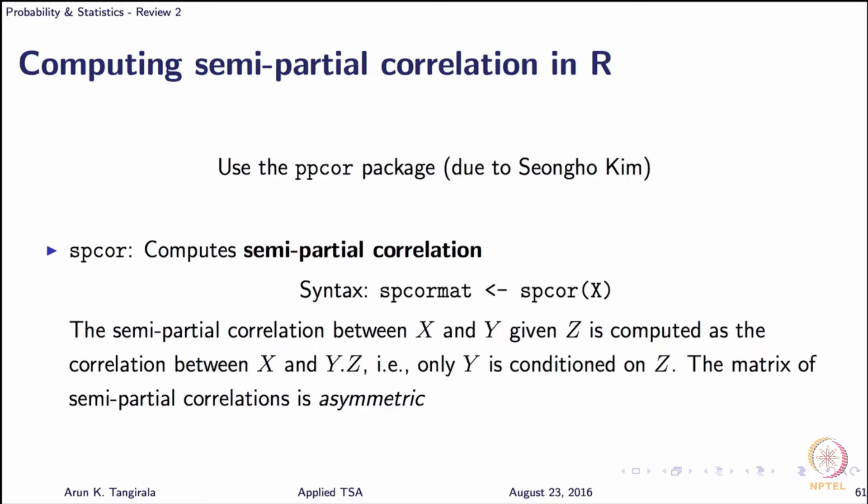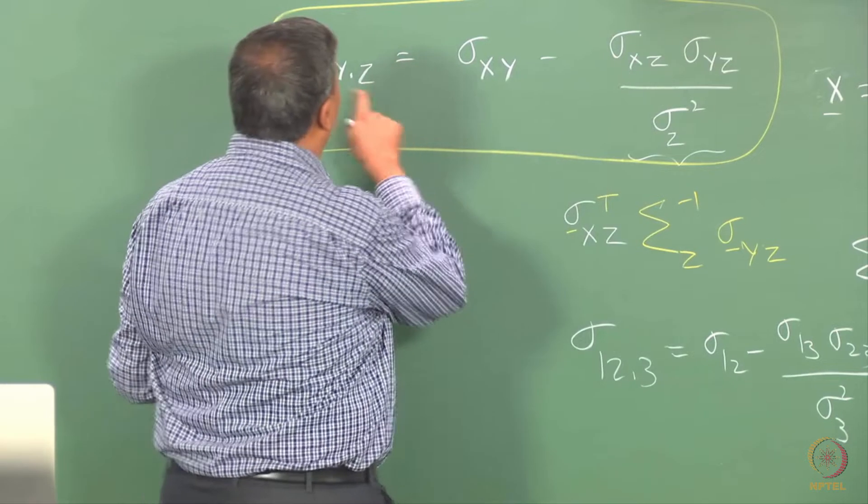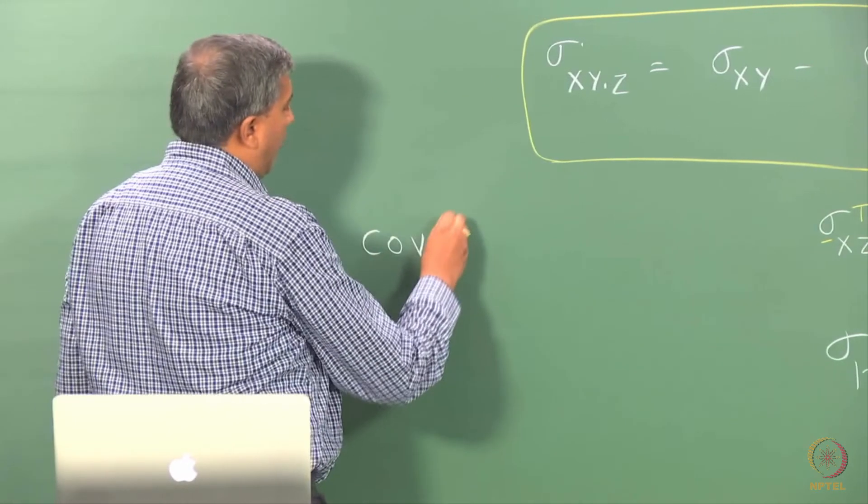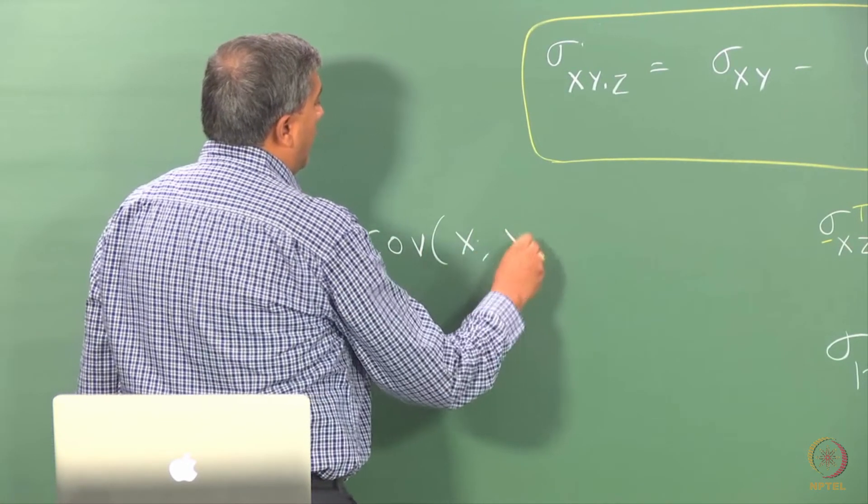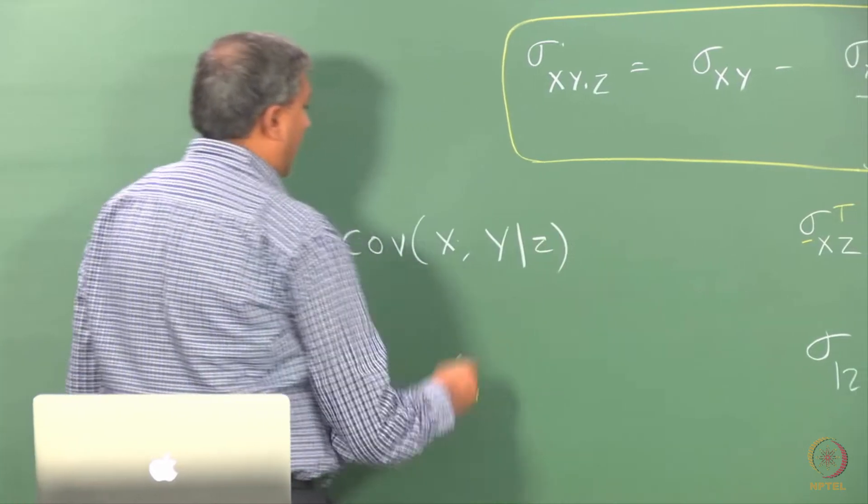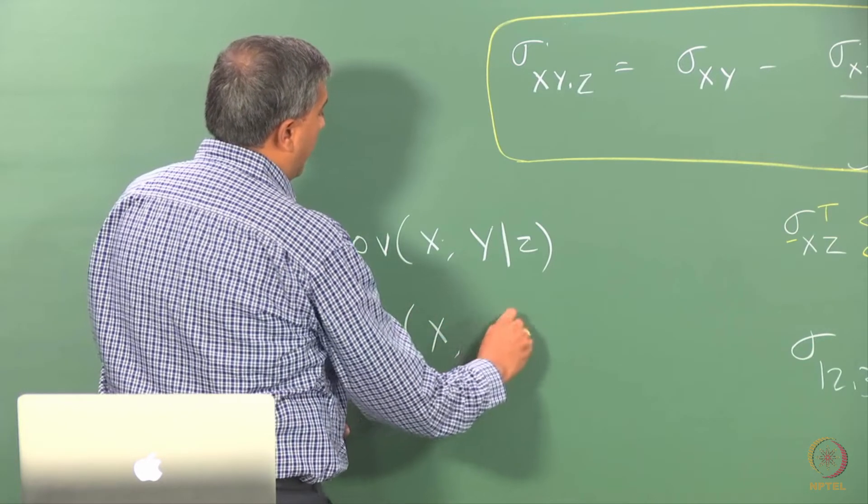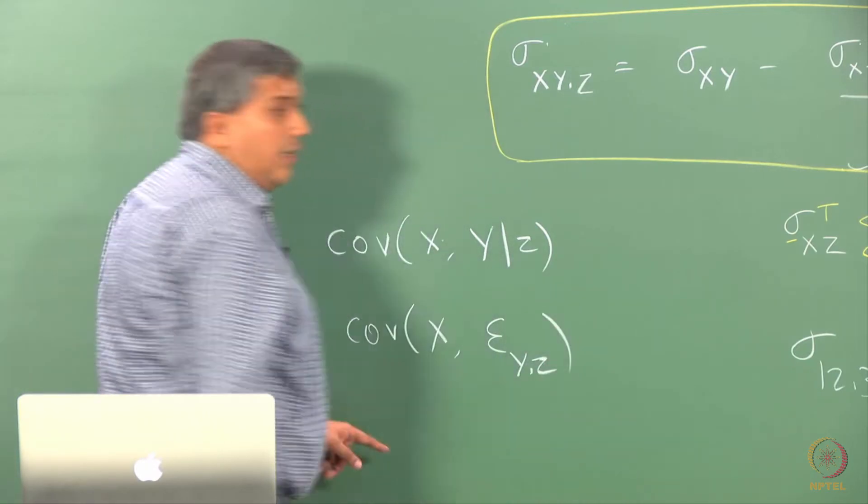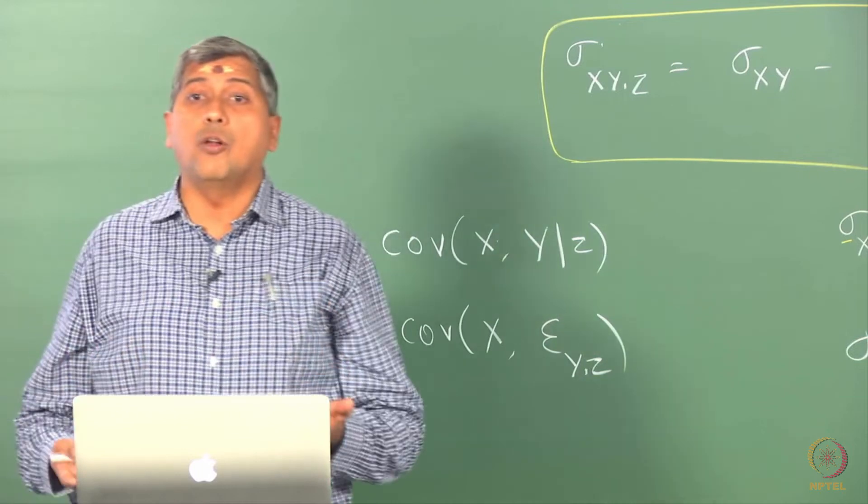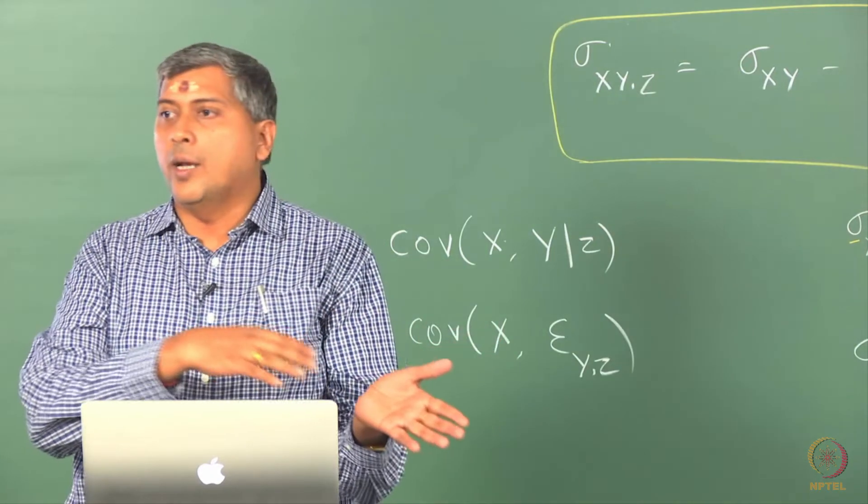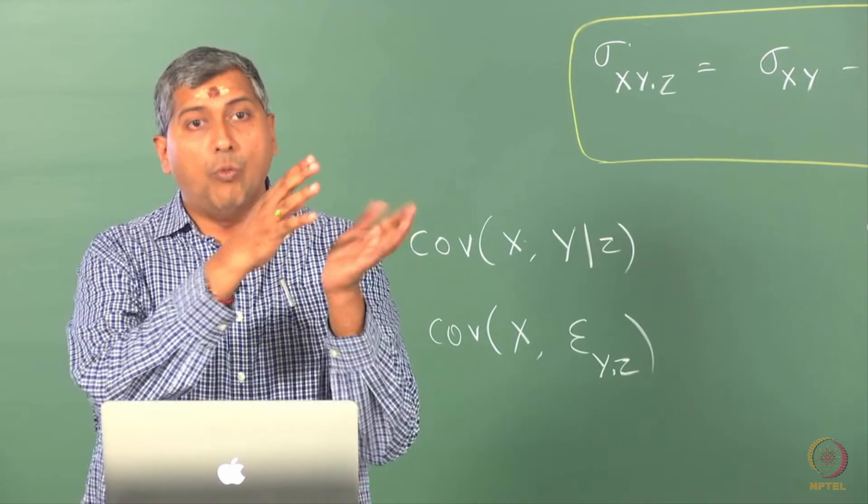So we have here in partial covariance, we are conditioning both x and y on z. But in semi-partial correlation, you would compute the covariance between x and y dot z, or y given z. In other words, in terms of the residuals, you would compute covariance between x and epsilon y dot z. This would be the semi-partial correlation between x and condition y. Likewise, you can compute semi-partial correlation between y and condition x.